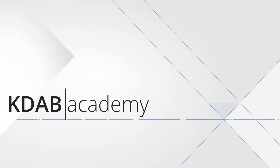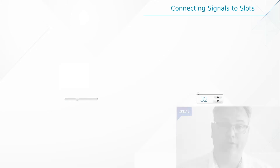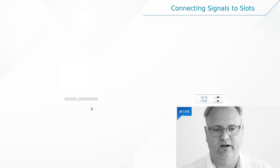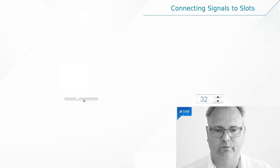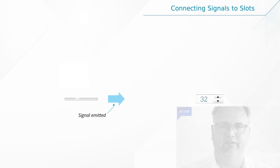I'm going to show you a small animation on how a slider and a spin box can communicate with each other. So I have a slider over here, I've got a spin box over there, and they want to communicate. The user takes the slider and presses something on it, and what will happen when he does that is that the slider emits a signal.